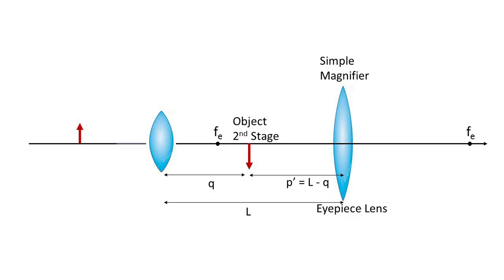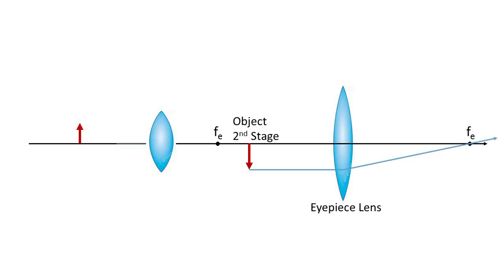In the second stage of a microscope, an eyepiece lens with a focal length longer than the focal length of the objective lens, perhaps a few centimeters, is used as a simple magnifier to observe the image formed by the objective and to further magnify. The image from the first stage becomes the object for the second stage. Given that L is the separation distance between the two lenses, the new object distance P prime is given by L minus Q.